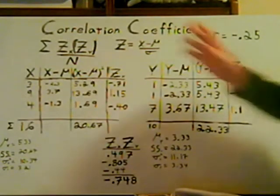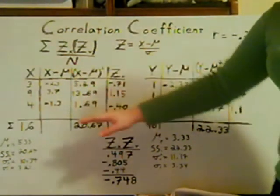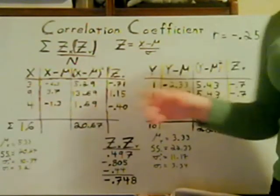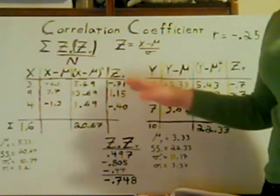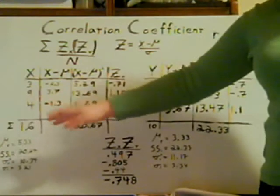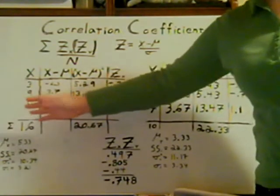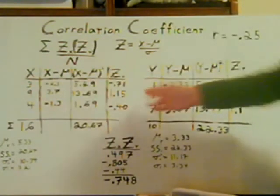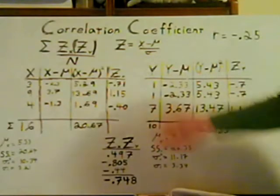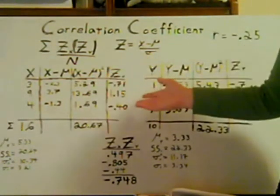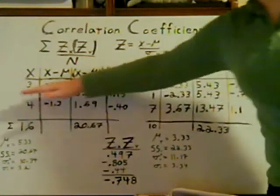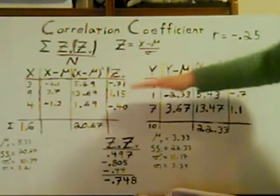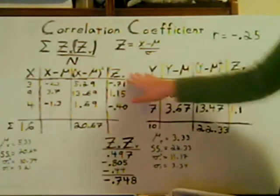It's very important that you keep the cases or the people together. For example, let's say the person who had three dice but one tabletop game is Bob. The second person is Susie, and the third person is Leroy. You cannot take Bob's dice score and multiply it by Susie's number of tabletop games — that just wouldn't make sense and that's not how you measure correlation. You have to take Bob's z-score for dice times Bob's z-score for tabletop games.